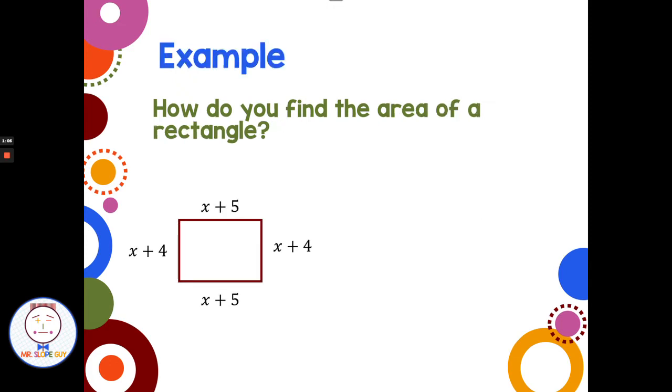New problem. How do you find the area of a rectangle? We have a rectangle with some binomials for length, binomials for width. Area of a rectangle is just length times width.